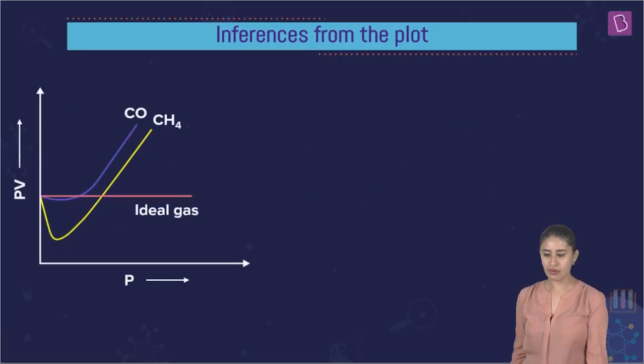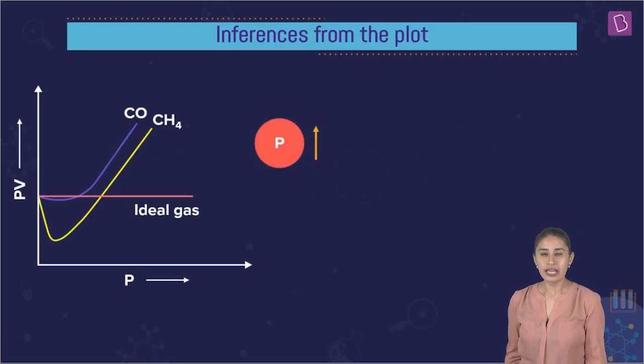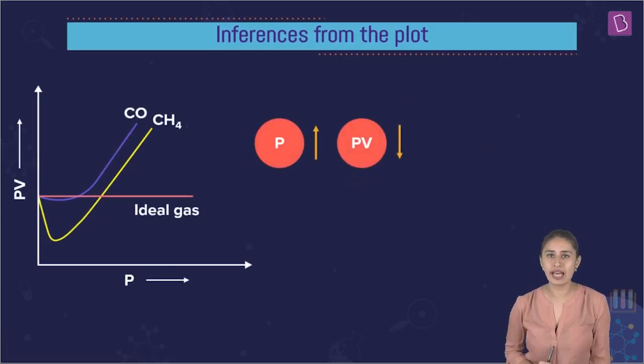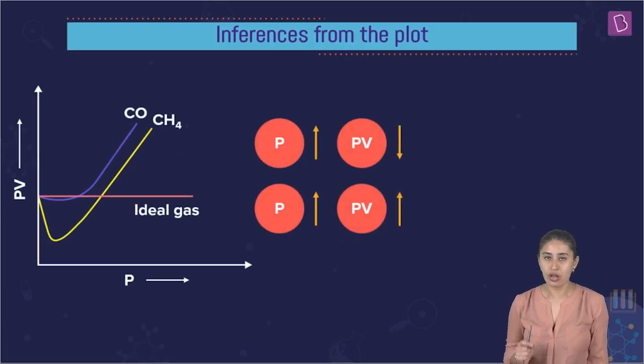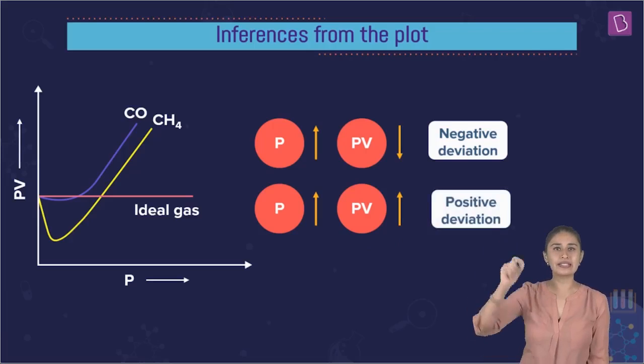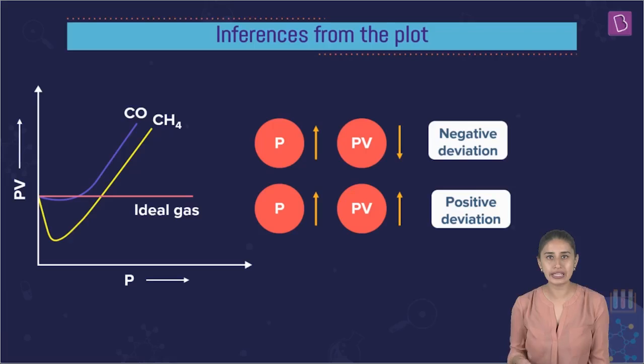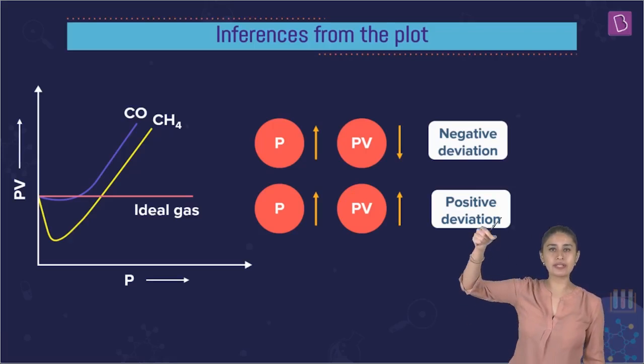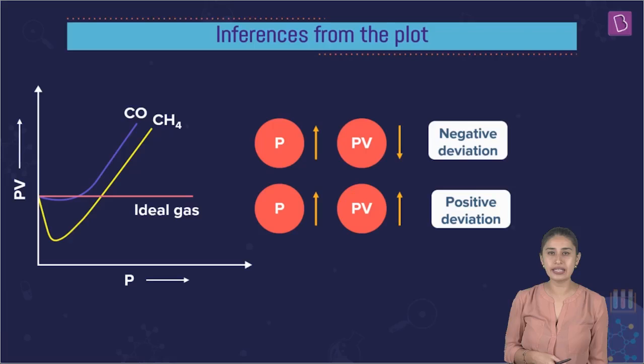Next one. Here, there are two striking things happening. As we are increasing the pressure, first the PV decreases. First the PV decreases, and then it increases with the further increase in pressure. It takes a dip and after it has attained the minima, then what happens is it again starts increasing.